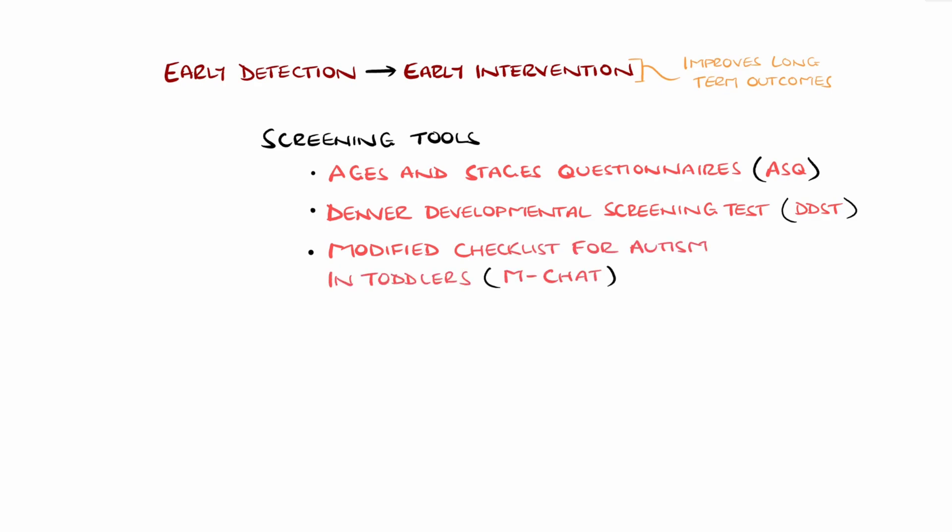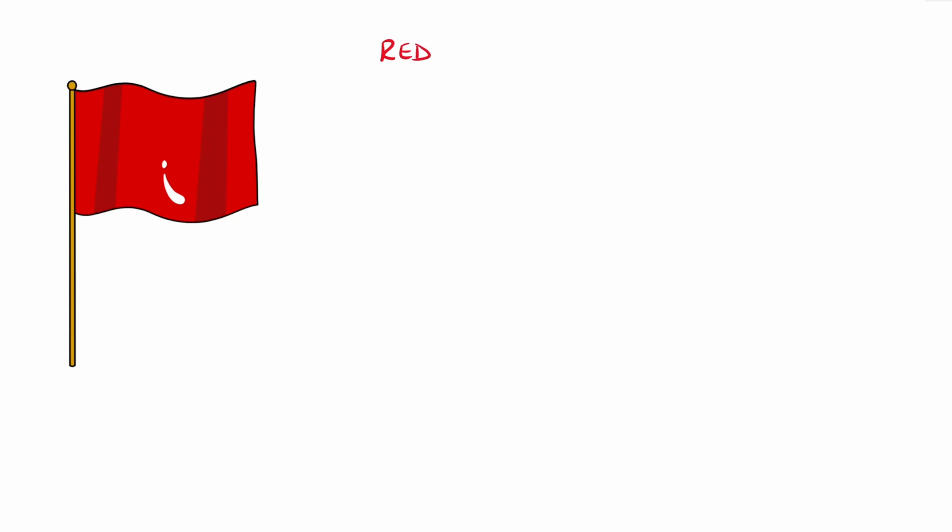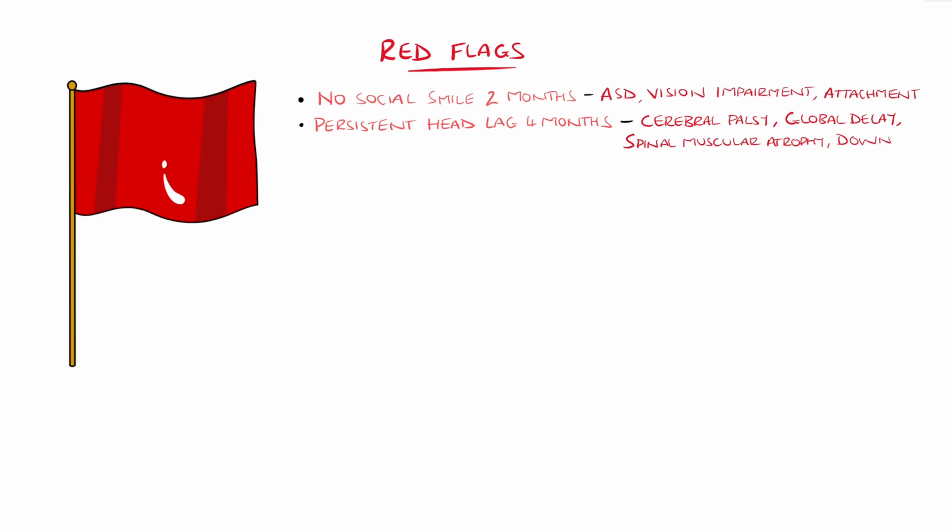Examples of red flags in development include: no social smile by two months, with a differential of autism spectrum disorder, vision impairment, attachment disorders, and even severe developmental delay. A persistent head lag at four months could indicate cerebral palsy, global developmental delay, neuromuscular disorders like spinal muscular atrophy, or hypertonia, for example Down syndrome. If they don't babble by six to nine months, this could indicate hearing impairment, ASD, or speech and language delay, as well as global developmental delay.